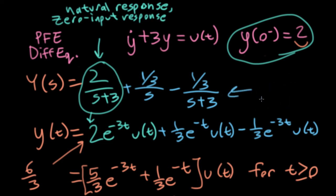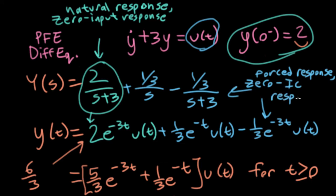Whereas the terms here in light blue, those came from the presence of this unit step function and the input. So this is sometimes called the forced response, because this is being forced by the input. Or it's also called the zero initial condition response.